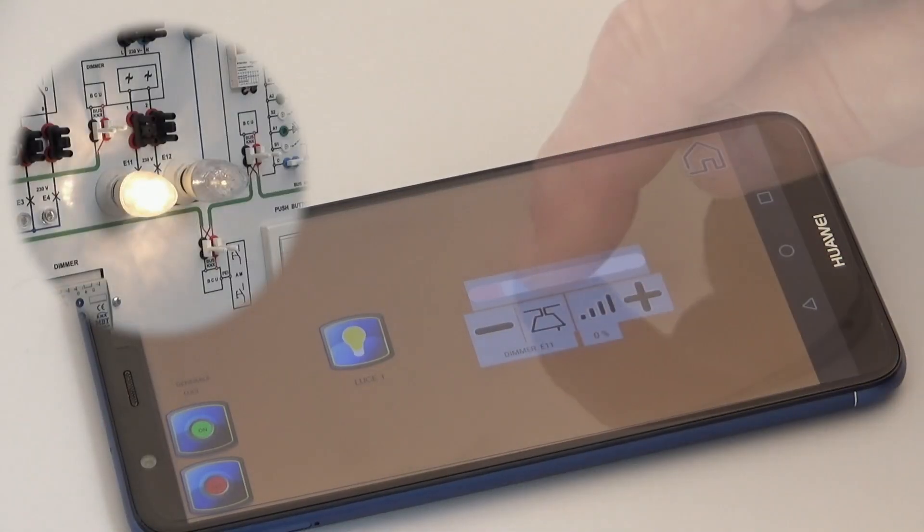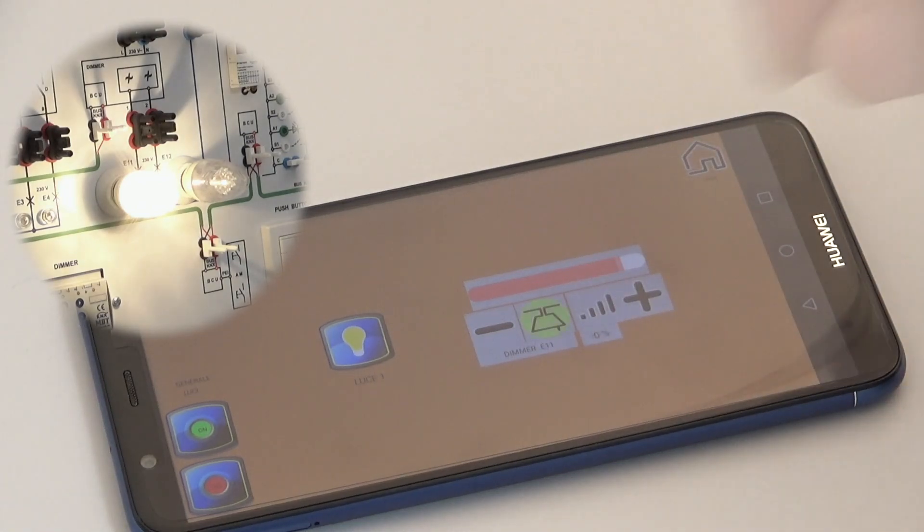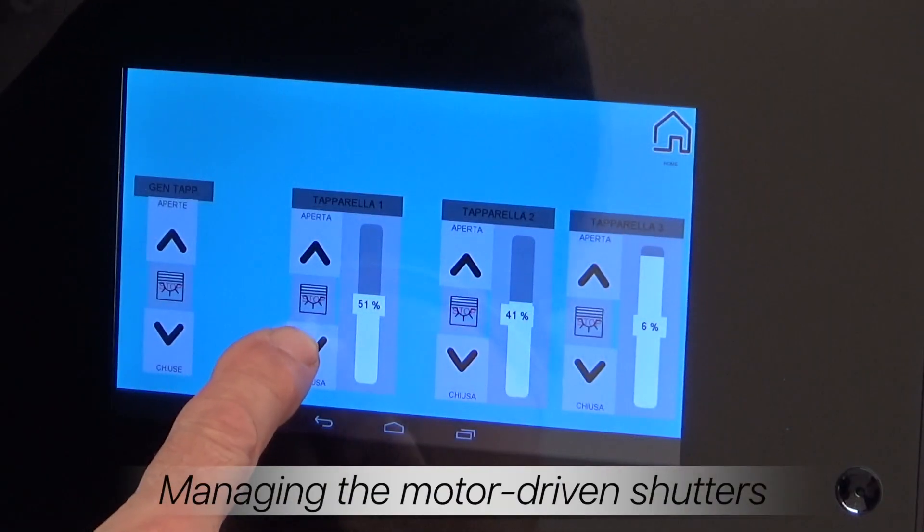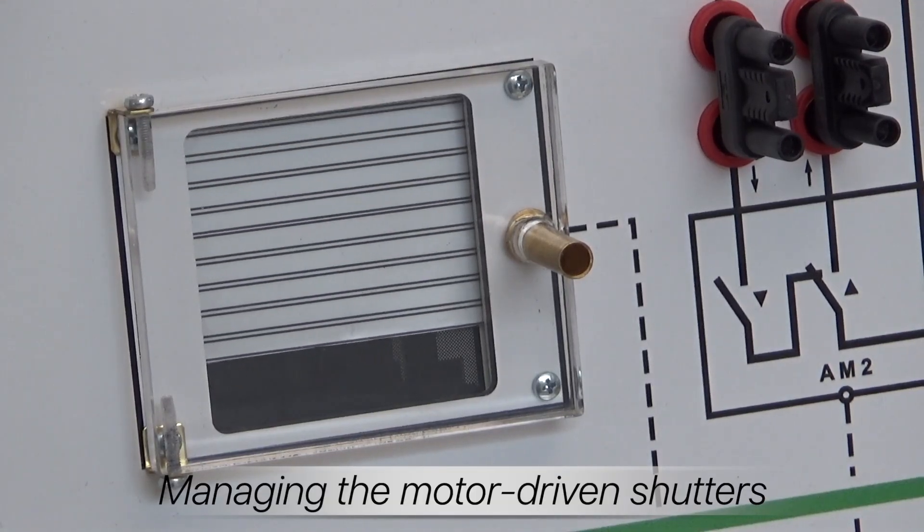The same operations can be performed using a Wi-Fi connected mobile device such as a smartphone. Each shutter and the room temperature are controlled by this panel.